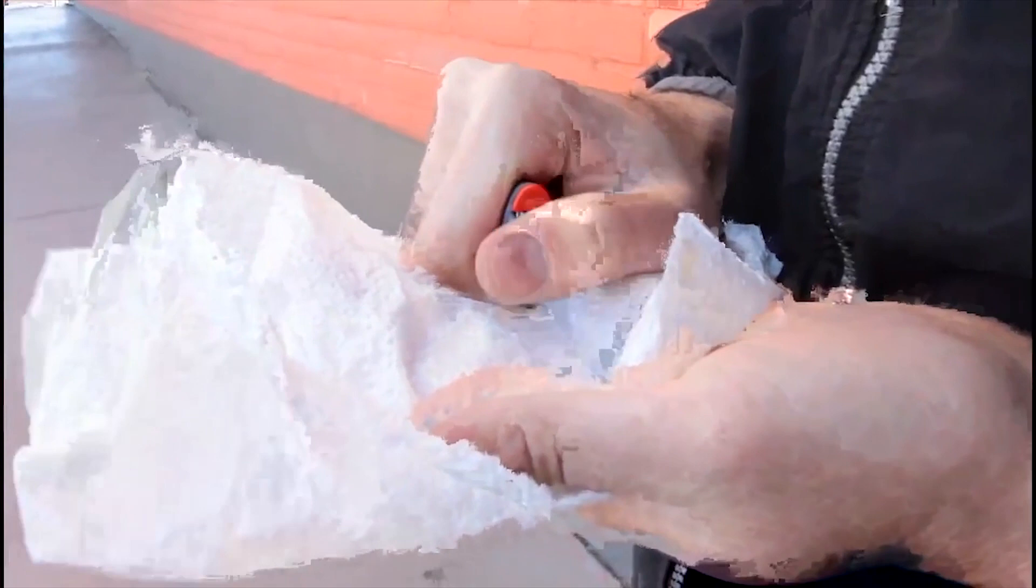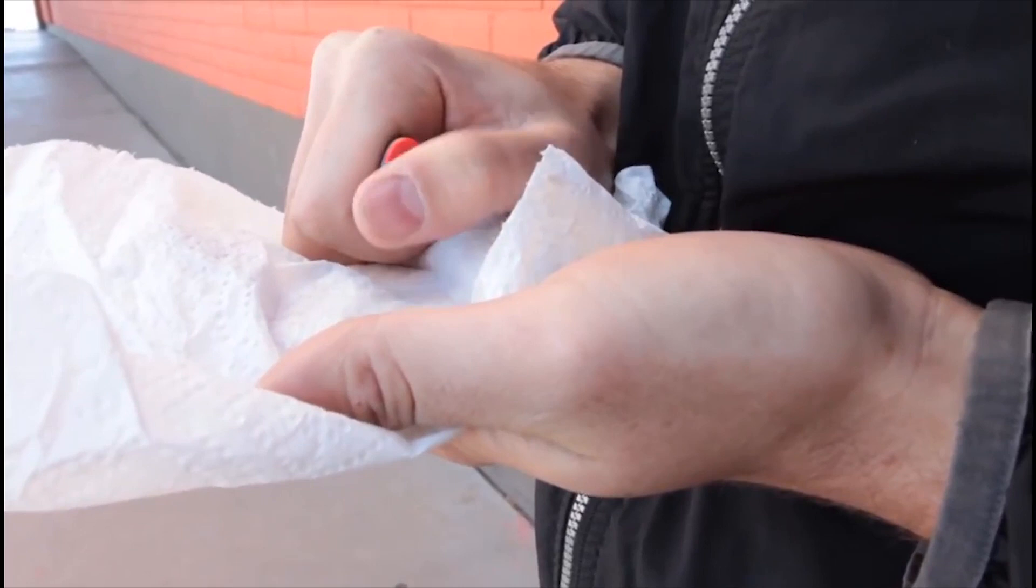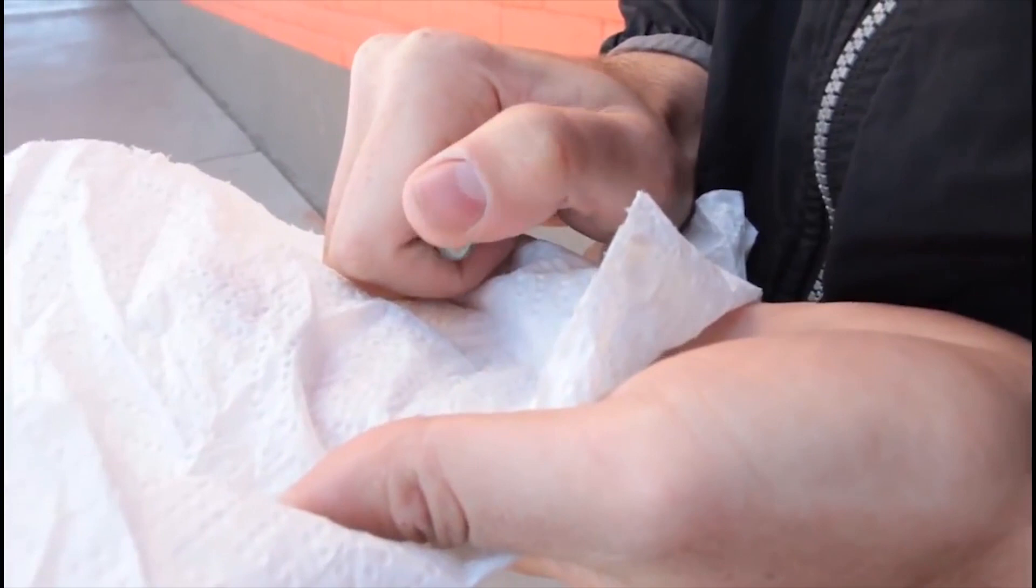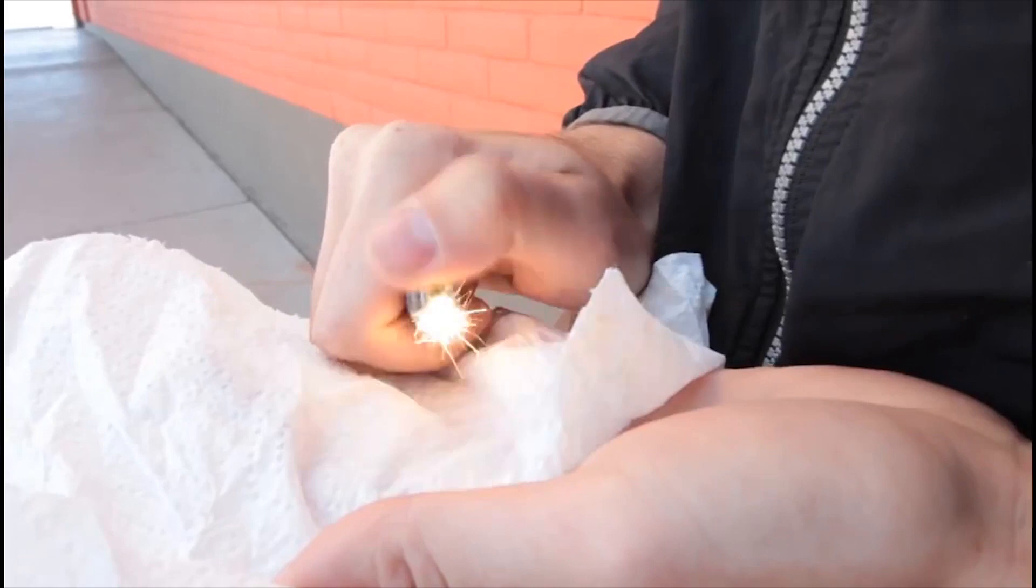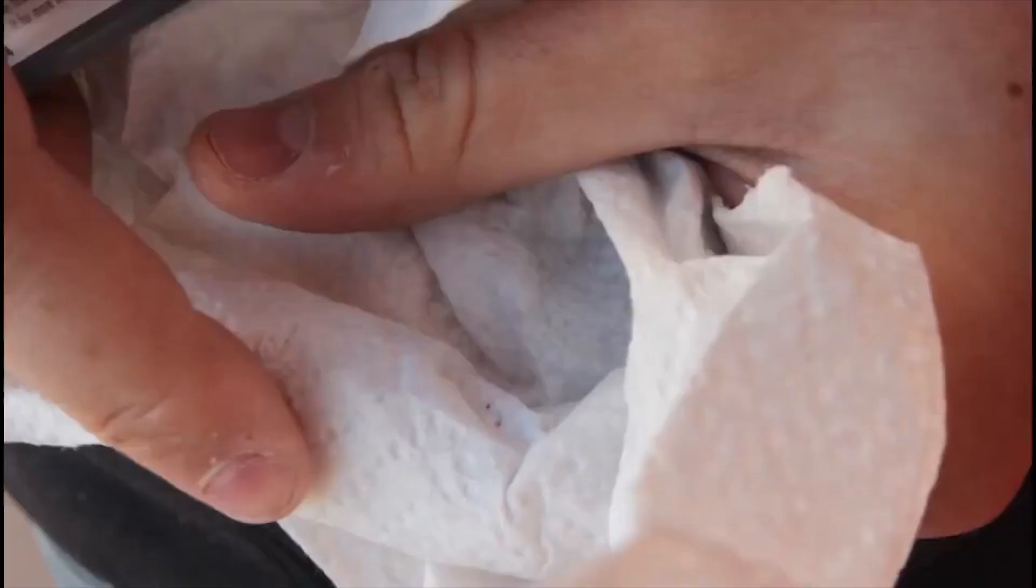If your lighter is dead, you have no more juice in it, no more butane in there, but it still sparks - how could you use it to make fire? All you're gonna need is a piece of paper, any kind of piece of paper. Hold it like this, make sure it's not too windy, and you just go slowly. You will see that some of that stone over there - I forgot how you call it in English, in Russian it's called kremeny, that's what we call it, kremeny inside of the lighter. How do you call it in English? Let me know in comments below. But yeah, you keep doing this till you're gonna have a bunch.